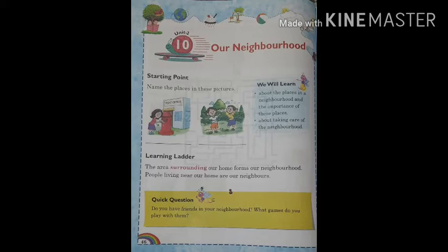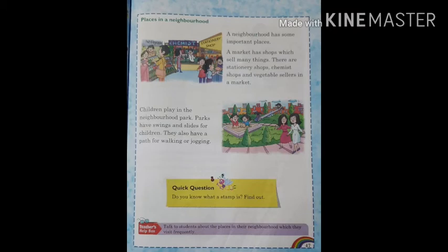Okay so now let us discuss places in our neighborhood. A neighborhood has some important places. Neighborhood में बहुत सारे important जगे होते हैं, जैसे कि market. Market बहुत important जगा है क्योंकि market में हम लोग को बहुत सारे ज़रूरत की चीजे मिलती है। Market has shops which sell many things. There are stationary shops, chemist shops and vegetable sellers in a market.